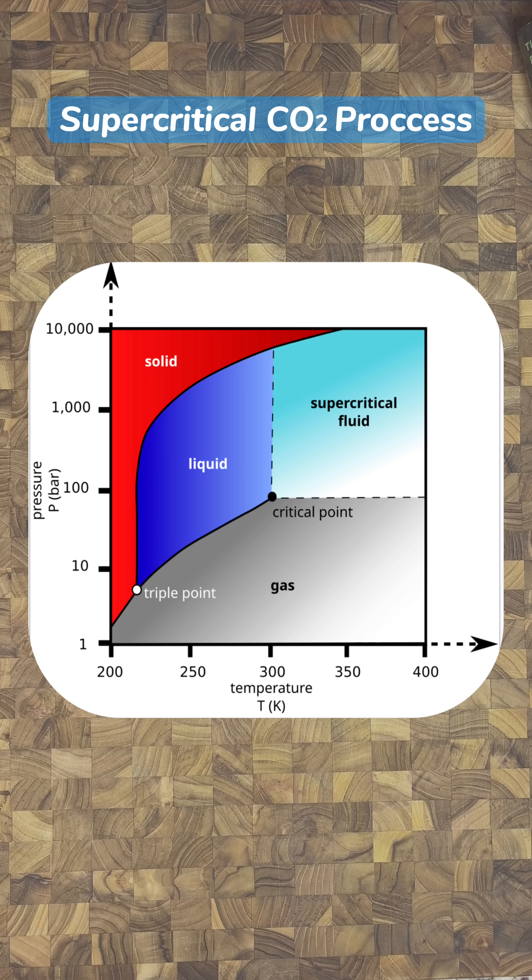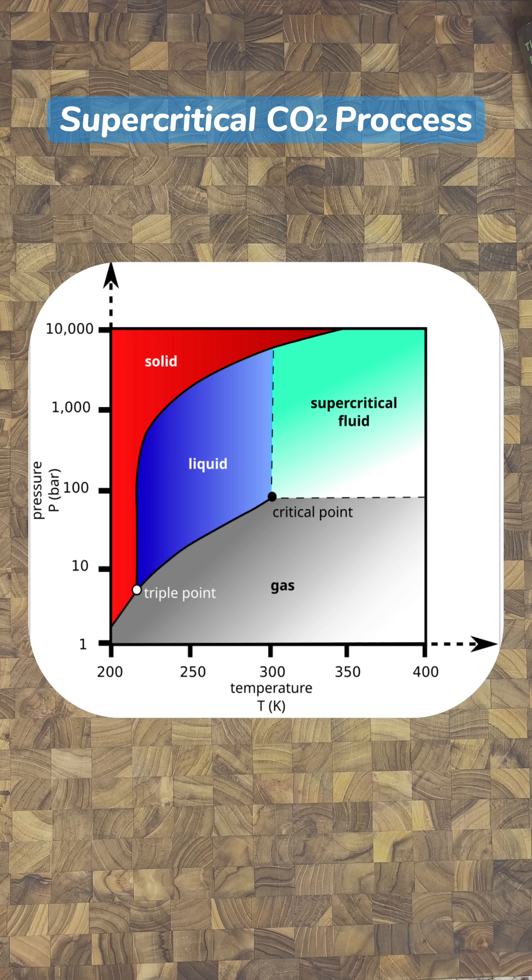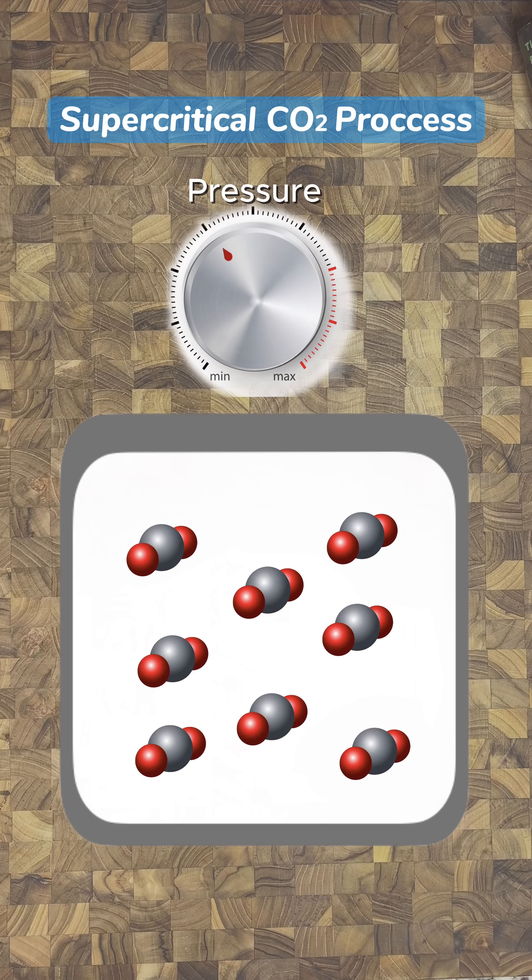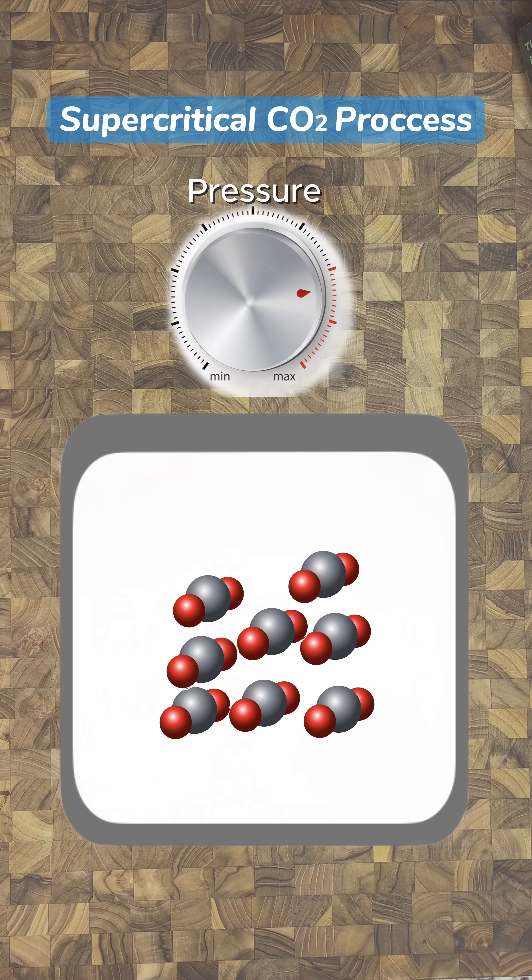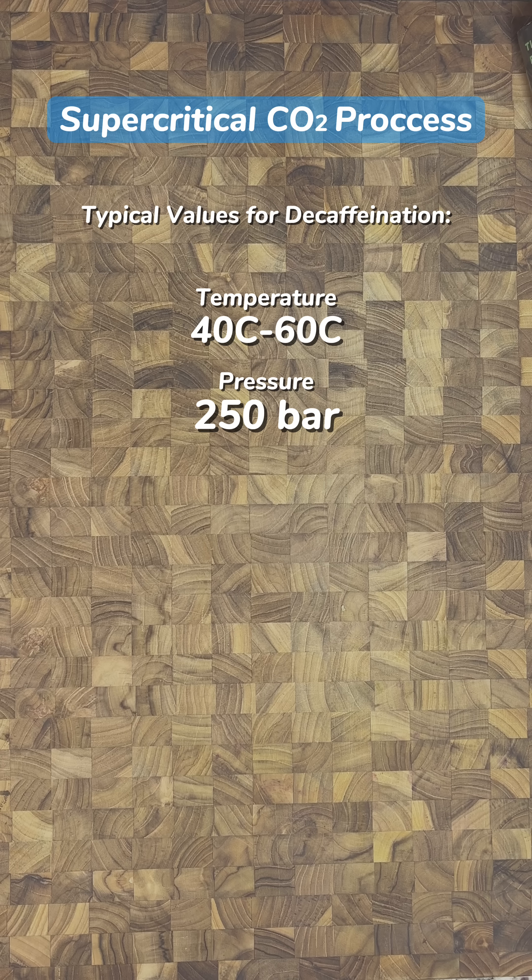When CO2 is heated and pressurized to a supercritical state, it has a liquid-like ability to dissolve things and a gas-like permeability through the bean. The pressure can be precisely tuned so the density is just right to dissolve caffeine specifically. This is typically about 250 bar, or the pressure of a mile and a half deep in the ocean.